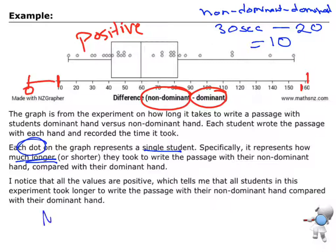If it was the other way around, if I had my non-dominant minus the dominant, say the dominant hand took longer. So maybe that was 50 seconds and the non-dominant hand was 30 seconds. So if I did 30 take away 50, that would give me a negative 20. So in terms of my graph, I would be drawing a graph down here going down to negative 20 and I'd have a dot down there at negative 20.